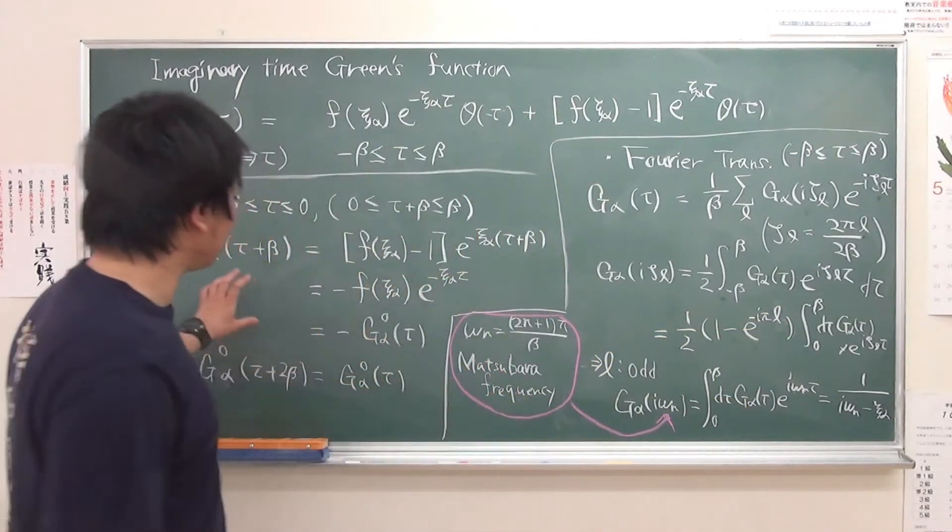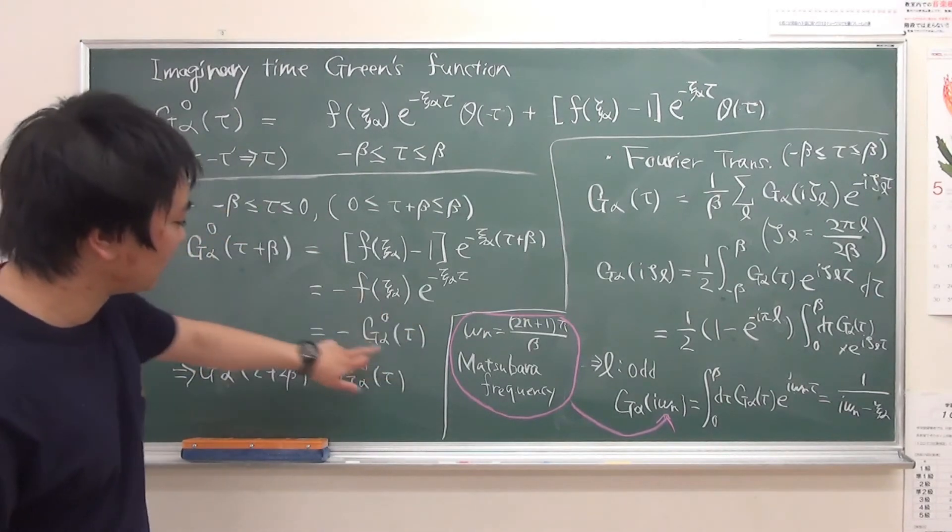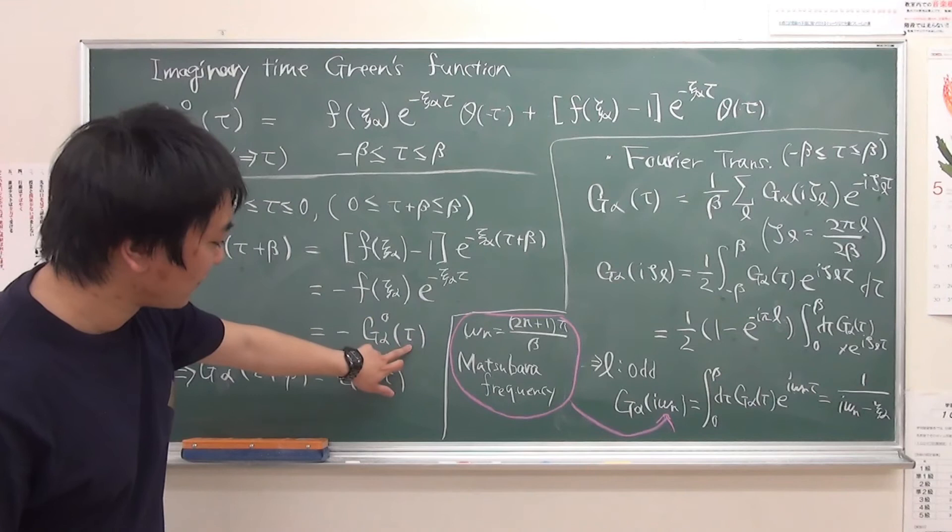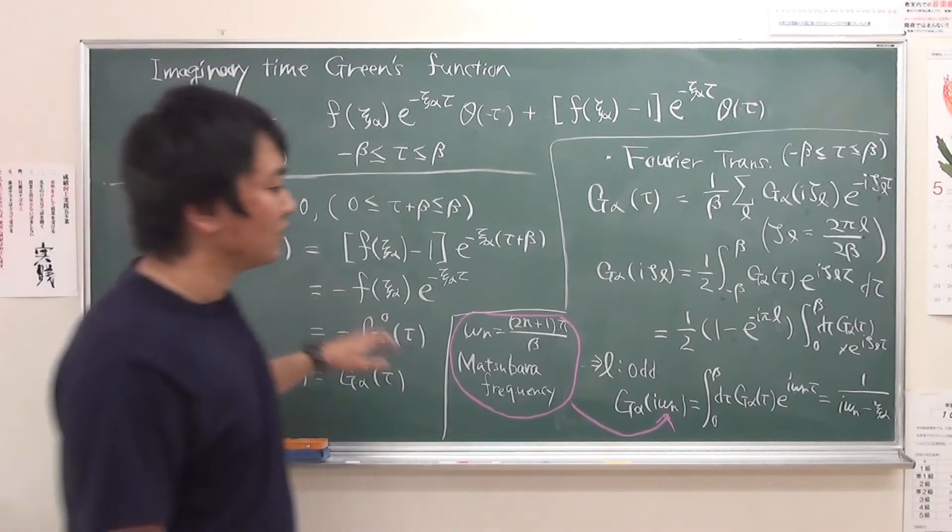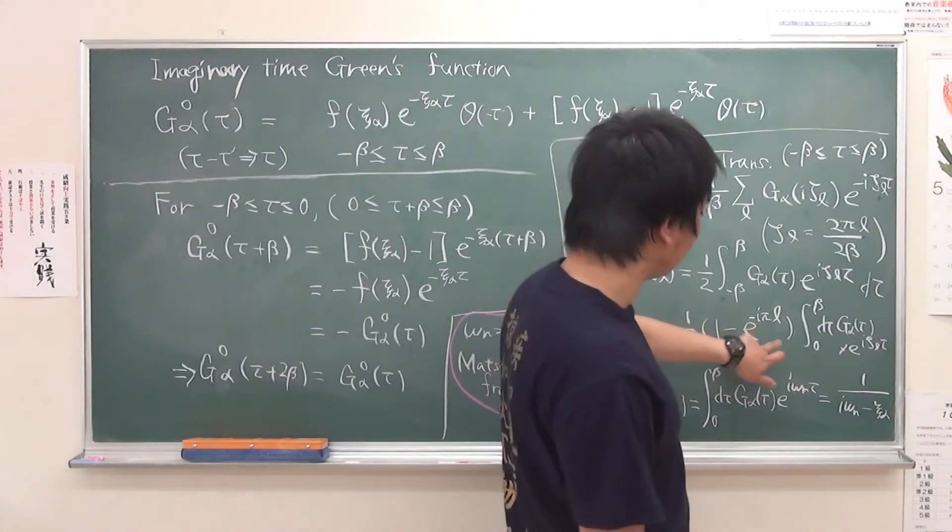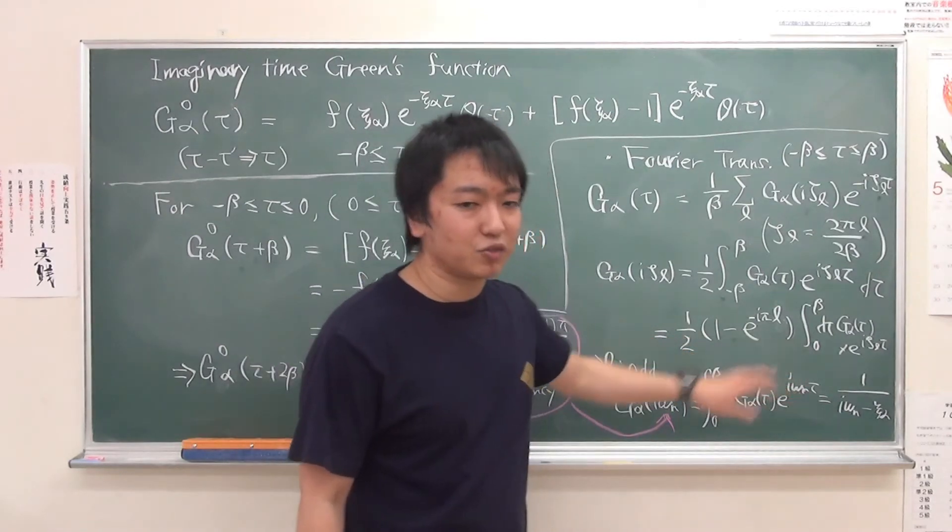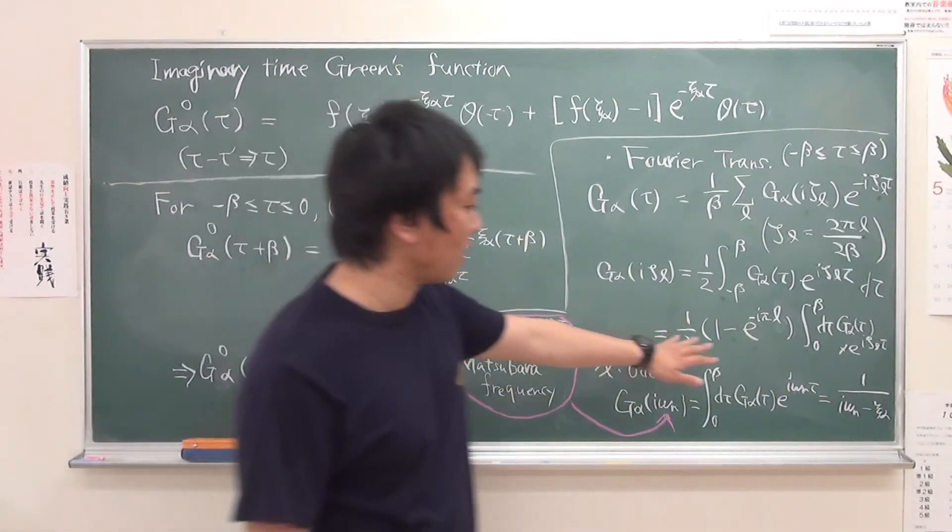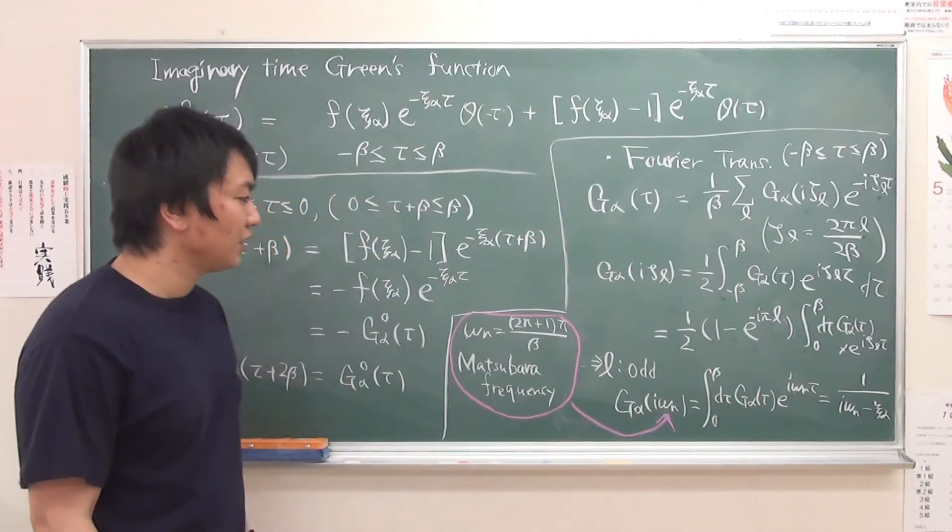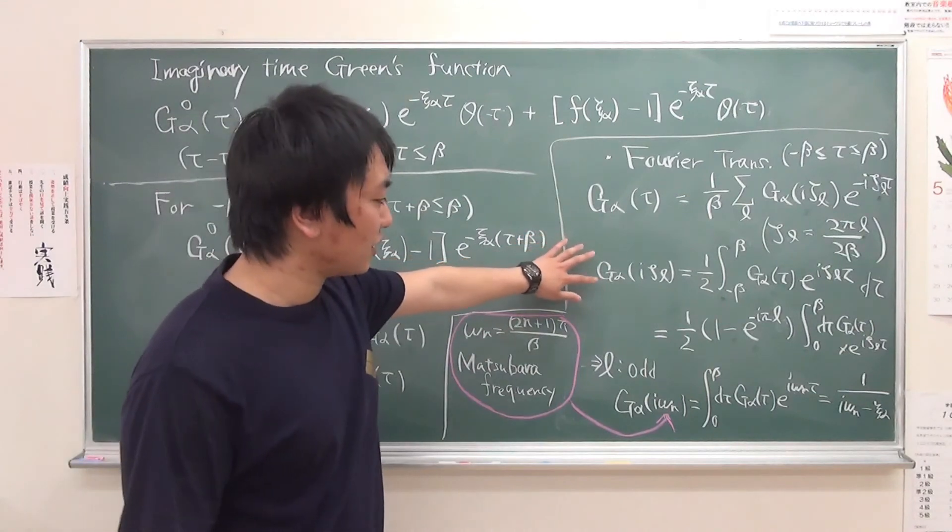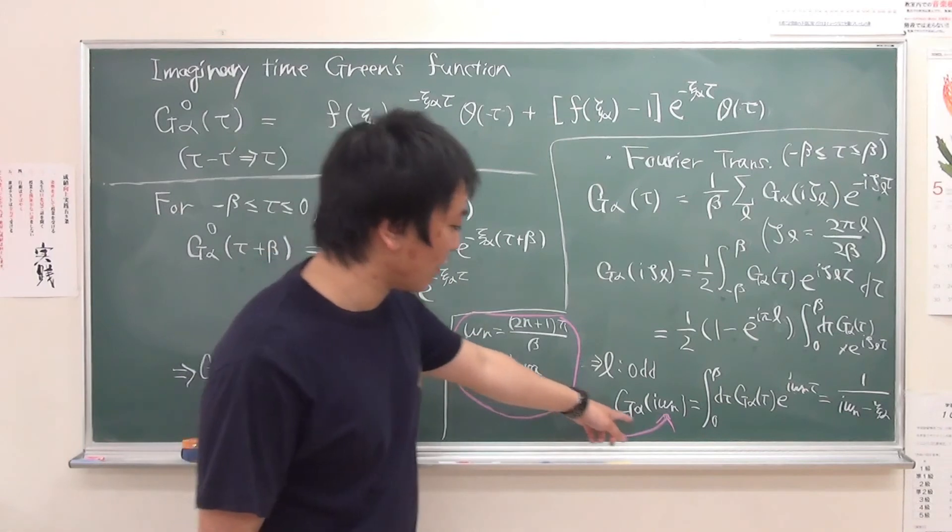So we just rewrite for the negative tau using tau plus beta. Then this factor arises. So this indicates L should be an odd integer. In the case of the even integer, this term disappears. Then, meaning the Green's function coefficients should be given by like this. Here, i omega_n is this is just theta_a.